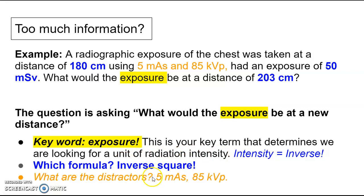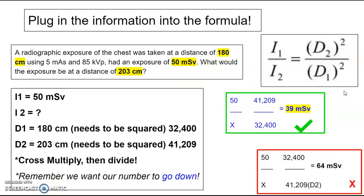What are the distractors? The distractors are these, this 5 mAs and 85 kVp. The mAs is in there just to confuse you, in hopes that it'll trip you up and you'll use the direct square law because you see an mAs. But the last sentence is not asking me for a new mAs. It's asking me for the exposure. So we're going to ignore that. That's in there just for fun. And the kVp is also in there just for fun, just to confuse you. So simply plug it into the formula. And just remember, inverse square law over here in the formula, the numbers are inverse. So I1 is across from D2 and I2 is across from D1. They should be diagonal from each other.